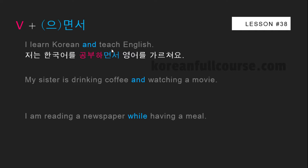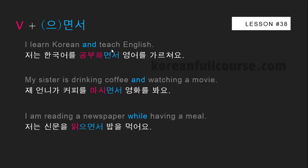Although in more advanced cases, where there is a dependence of one action on another, the subjects may be different. I'll show you one such example later. There are two more sentences to translate — you can pause the video and try them yourself. My sister is drinking coffee and watching a movie: 제 언니가 커피를 마시면서 영화를 봐요. I'm reading a newspaper while having a meal: 저는 신문을 읽으면서 밥을 먹어요.